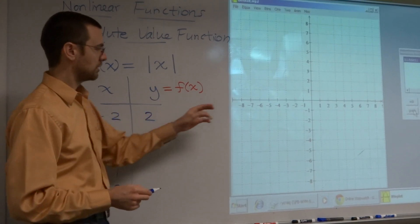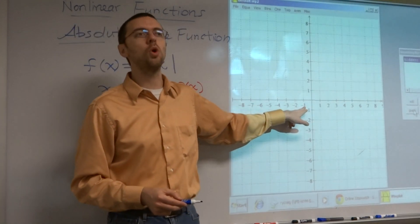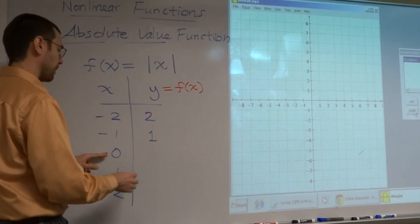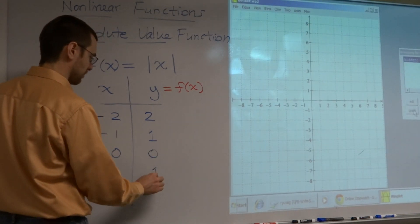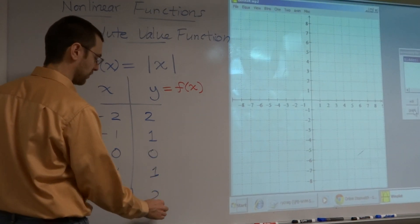Because the distance from zero for negative one is just one unit, right? What about zero? And then what? One. One. Two.